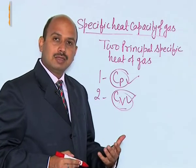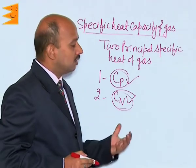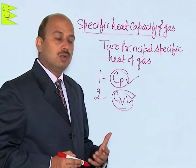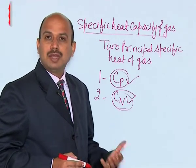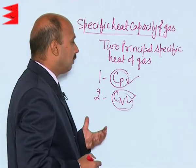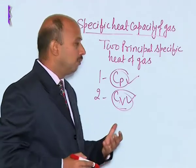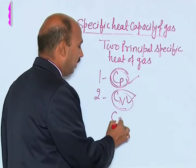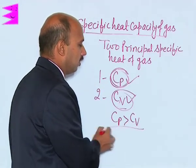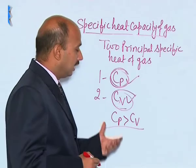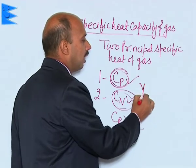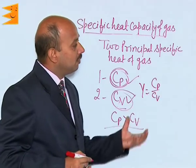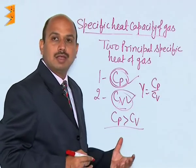So in the case of C p, whatever heat is supplied is used to change the internal energy — that means to increase the temperature — but also to do work against the pressure. Therefore, to increase the temperature by one unit degree, more heat is required in this case, so C p is greater than C v. The ratio of these two is written as gamma, equal to C p upon C v, which we have used in the adiabatic process.